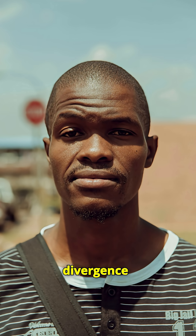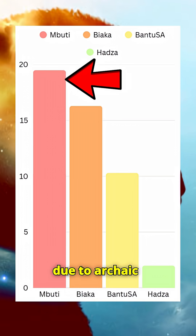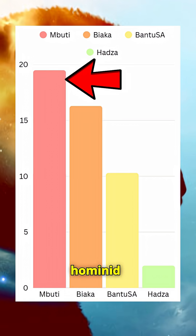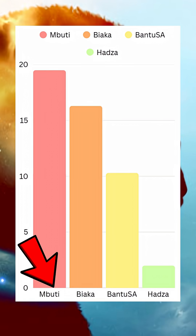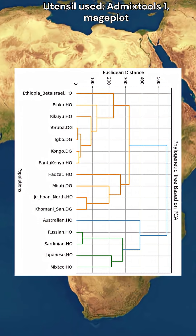A large portion of this divergence observed in South Africans and pygmies is due to archaic hominid admixture that reaches 20% in the Mbuti pygmies. I constructed a phylogenetic tree using an FST matrix generated with Admixtools 1.